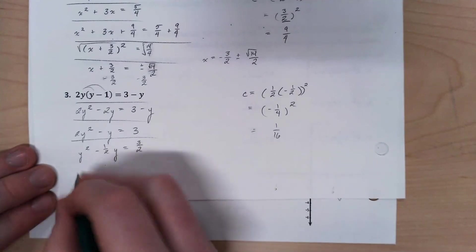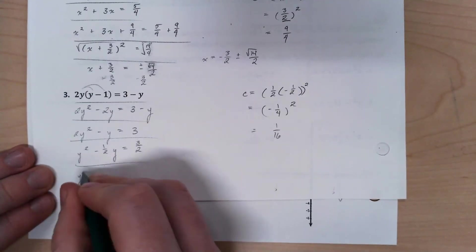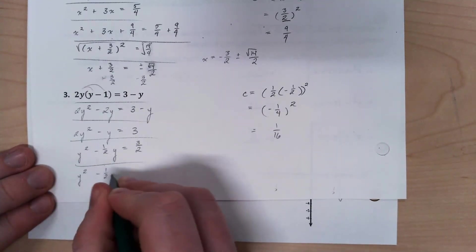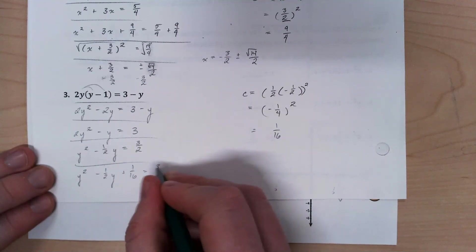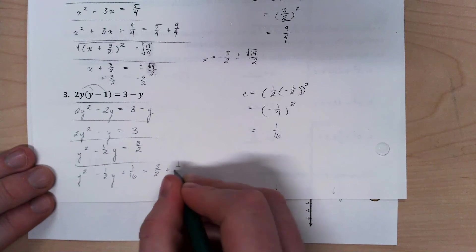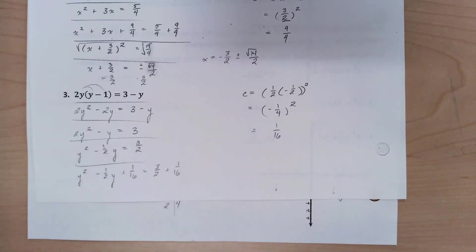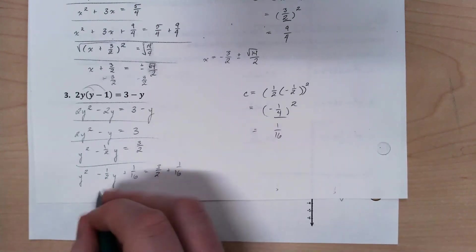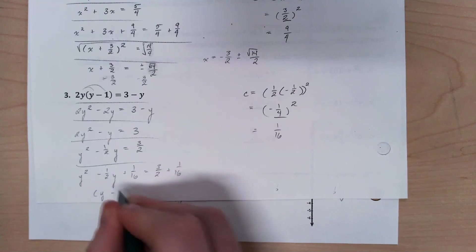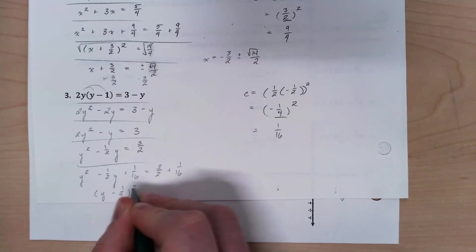So I'm going to be adding 1 over 16 to both sides. Plus 1 over 16. Plus 1 over 16. You've got to remember to get that on both sides. So looking to factor this, again, that value there is our key. y minus 1 fourth squared.